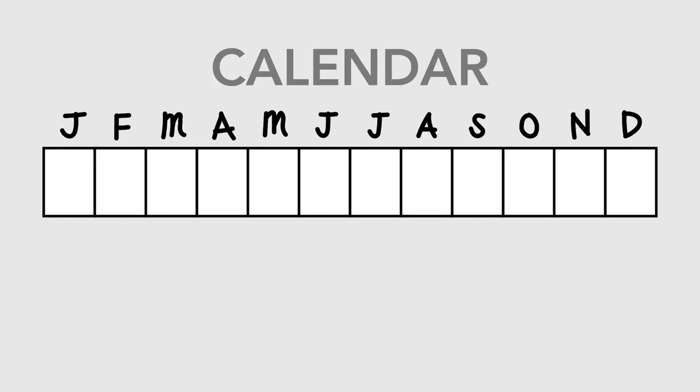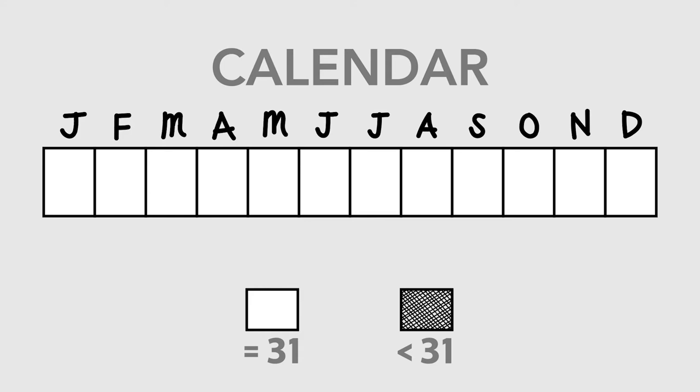Or maybe you've used your knuckles to memorize the different months of the year, where the bumps represent months with 31 days and the grooves are months with fewer than 31 days. So we have January, February, March, April, May, June, July, August, September, October, November, and December. But by far the coolest way to memorize the different months of the year is to look at a connection between the calendar and music.